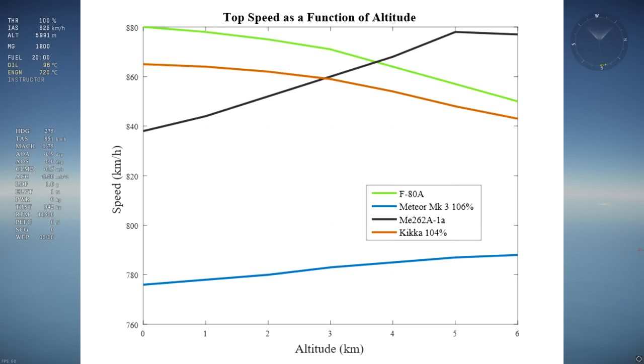Above 3 kilometers, the ME262 overtakes the Kika and the F-80 to become the fastest at high altitude. Low altitude speed is more important than high altitude for jets, so my top speed ranking is the following: F-80, Kika, ME262, Meteor.